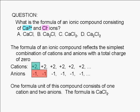Positive two plus negative one times two equals zero. The correct answer is choice C.